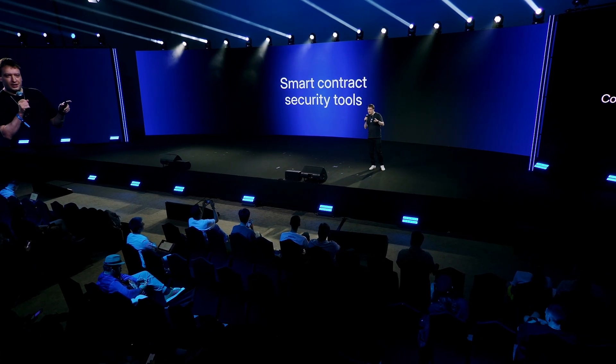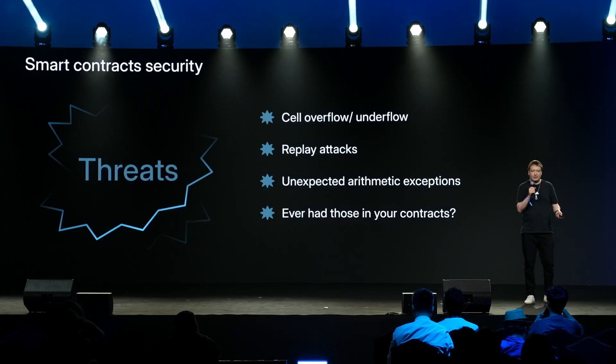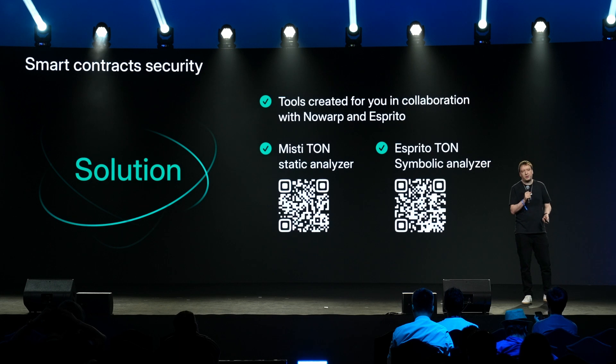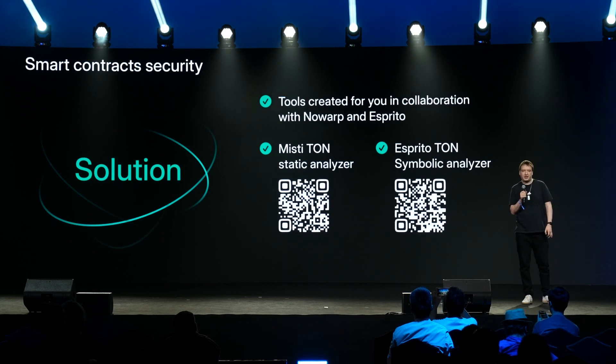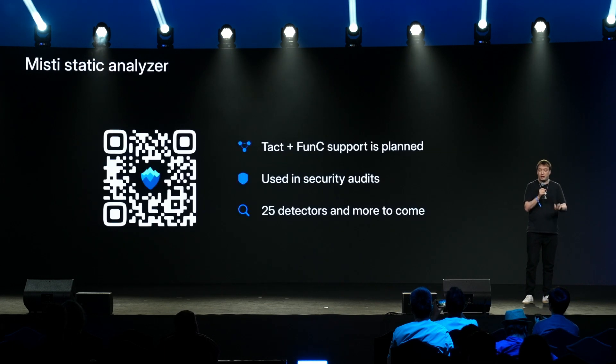Security. Smart contract security is a real pain — it's expensive. You don't want your project to lose funds because of some simple arithmetic bug in your contract. Threats include cell overflows, underflows, replay attacks, and arithmetic exceptions — if you've programmed for TON Blockchain, you've experienced these. Our solution is static analysis. We collaborate with two companies: the Misty TON Analyzer and the Sprito TON Symbolic Analyzer.